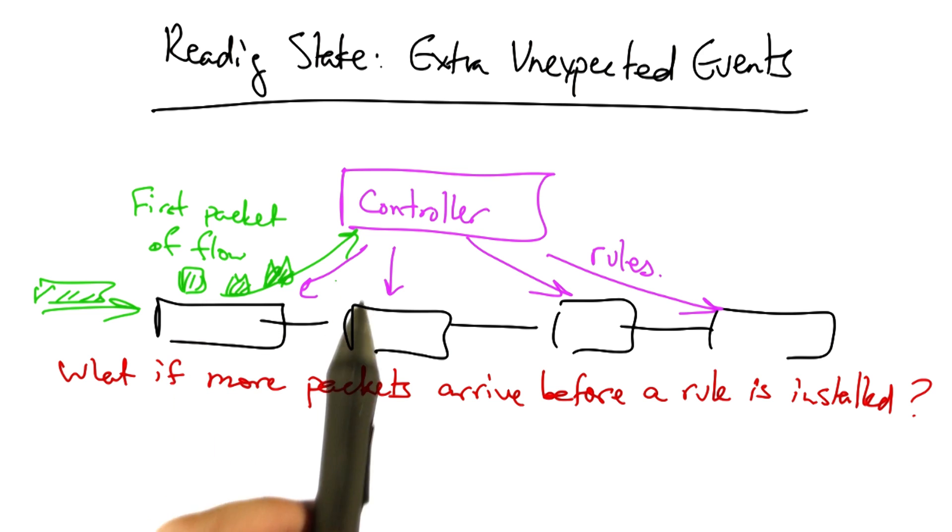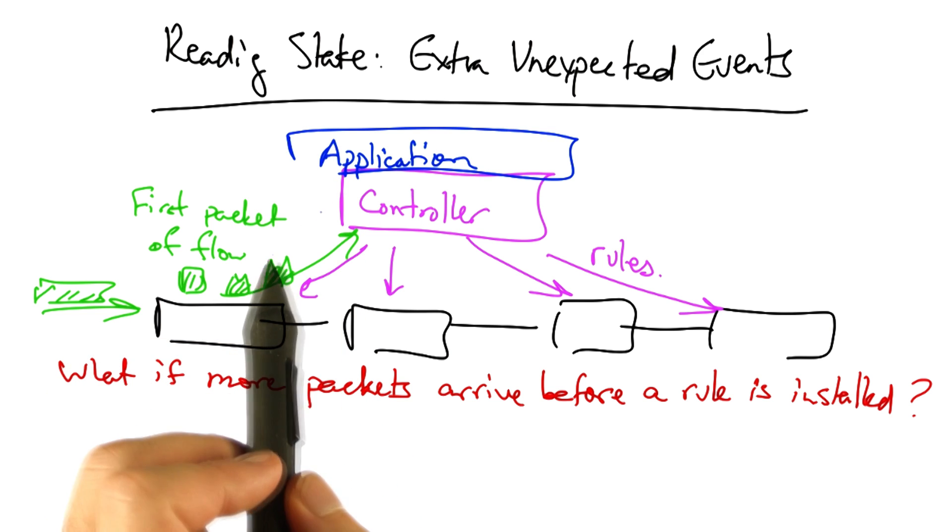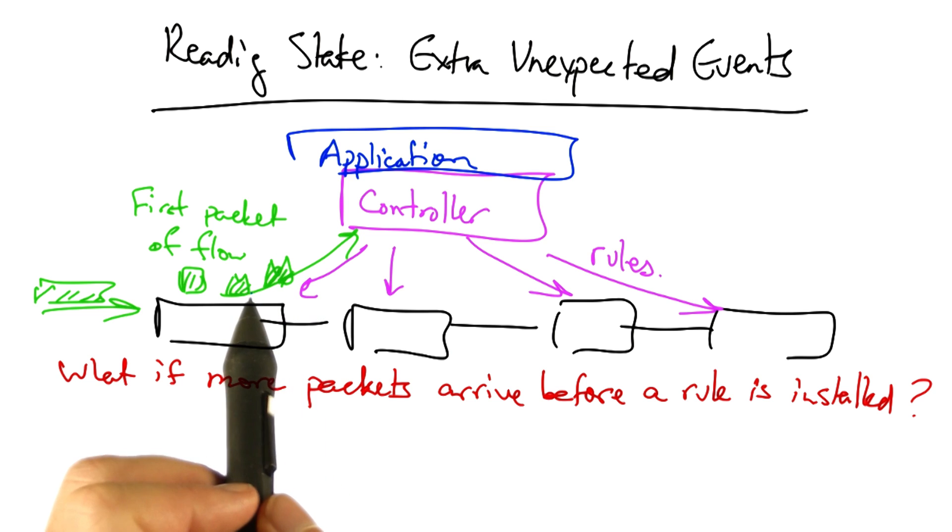At this point, multiple packets may reach the controller, but the application that is running on top of the controller may not need or want to see these additional packets.